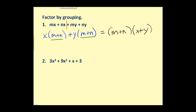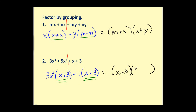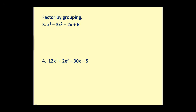Let's do a few more. Step one, divide it in half. Step two, identify the GCF of the first two terms — in this case it would be three x squared, leaving us with x plus three. The next two terms do not have any common factors other than one or negative one. Since we want a binomial factor of x plus three, we factor out a positive one. We can always factor out one or negative one when nothing else is common, leaving us with x plus three. We see the common binomial factor of x plus three, so factoring it out leaves us with three x squared plus one.